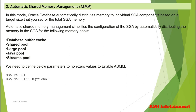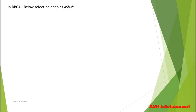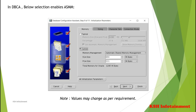SGA_Target is a dynamic parameter while SGA_Max_Size is a static parameter — you need to bounce the database if you change the value for SGA_Max_Size. SGA_Target can be set to a value less than or equal to SGA_Max_Size. In DBCA, to enable Automatic Shared Memory Management, choose the 'Custom' option, then select Automatic Shared Memory Management and fill in only the SGA size and PGA size. Oracle will then internally manage all internal pools of the SGA.